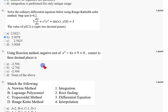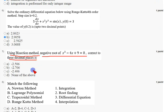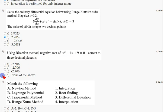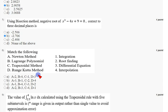Coming to the seventh question: using the bisection method, the negative root of x³ - 4x + 9 = 0 correct to three decimal places is — the answer I got is option B, that is -2.706. Mark option B as the correct answer for the seventh question.